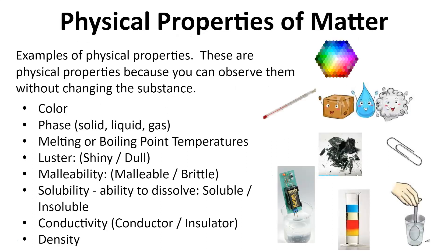Let's look at some physical properties. These are all examples of physical properties — feel free to pause the video and read through the list. You can observe them without changing the substance. For example, if you look at something and see its color, you're not changing the substance to observe that.